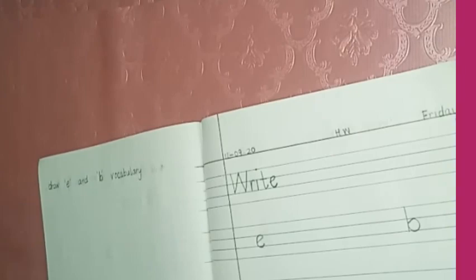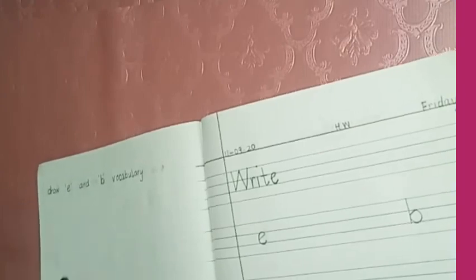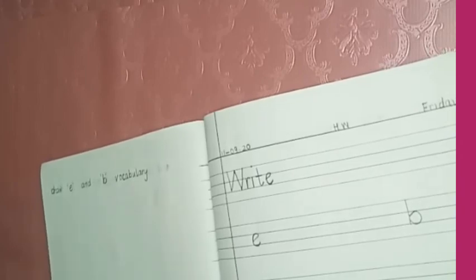Now, on the interleaf page, draw A and B vocabulary. You have to draw A vocabulary and then B vocabulary. You can draw egg, eggplant, whatever you like. And with B, you can make a ball or balloon.